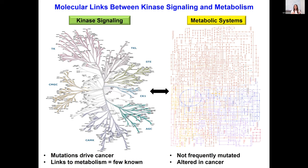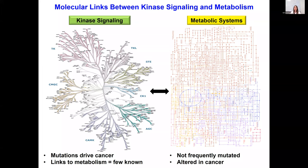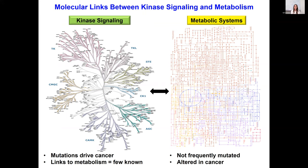Even though metabolism is deregulated in cancer, we only know of a handful of enzymes that are mutated in cancer — metabolic enzymes are not frequently mutated. On the other hand, signaling pathways, especially cancer signaling pathways comprising kinase signaling, are heavily deregulated in cancers and drive cancer. We now appreciate that cancer signaling can reprogram metabolism either through direct regulation of metabolic enzymes or through transcriptional regulation. In my postdoctoral years and in my lab, we're interested in understanding how signaling communicates with metabolism to identify key nodes we can target for cancer.